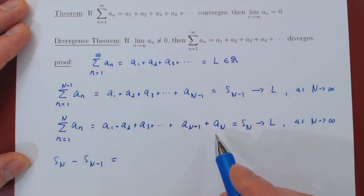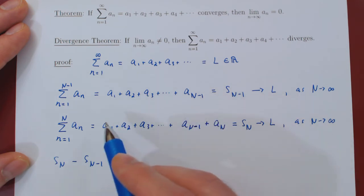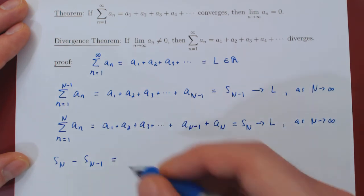Well if you look, everything is common but the very last term. If you take all of S_N and you subtract S_{N-1}, then you're removing all the terms from the sum except for the very last term, a_N.